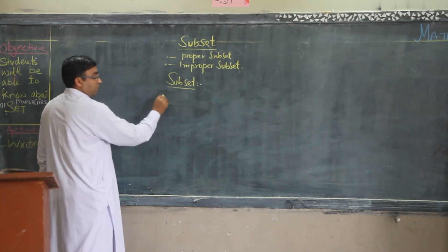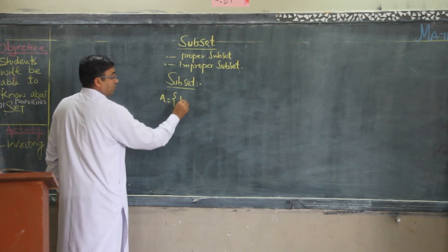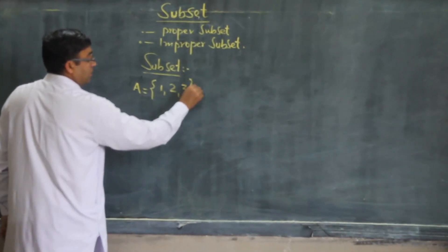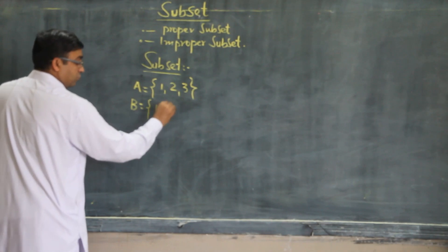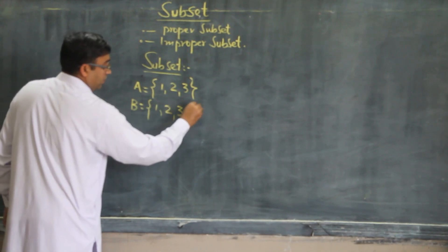If A is equal to 1, 2, 3 and B is equal to 1, 2, 3 and 4.